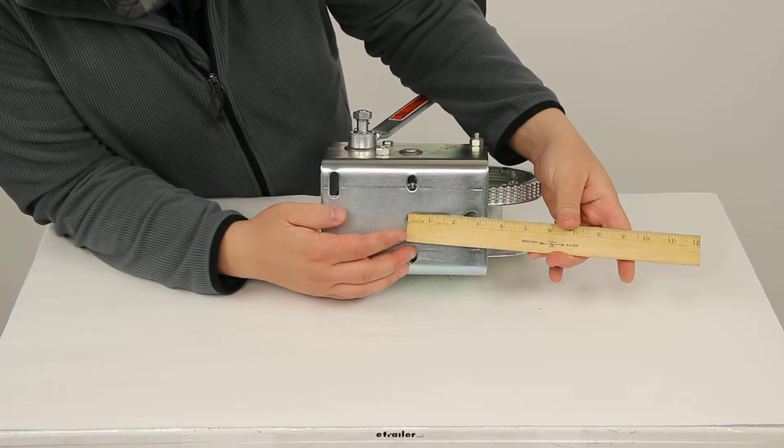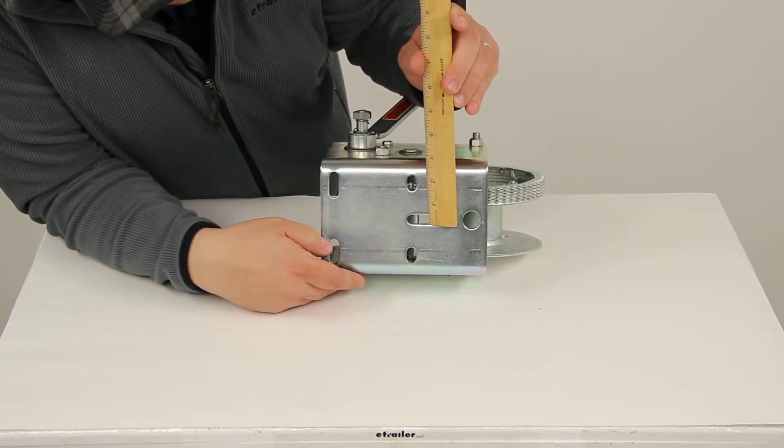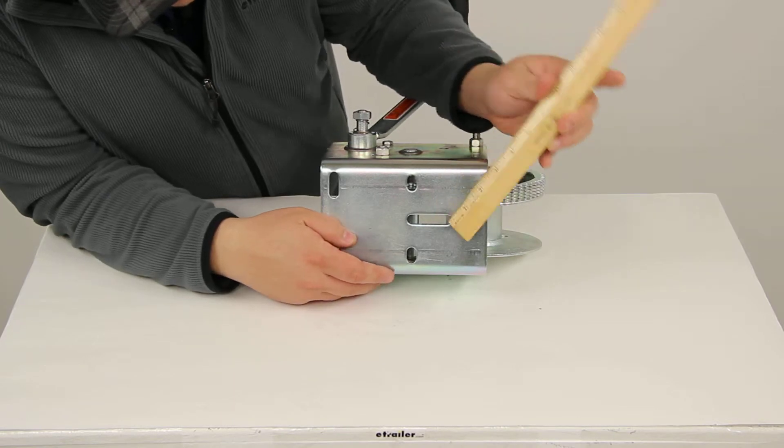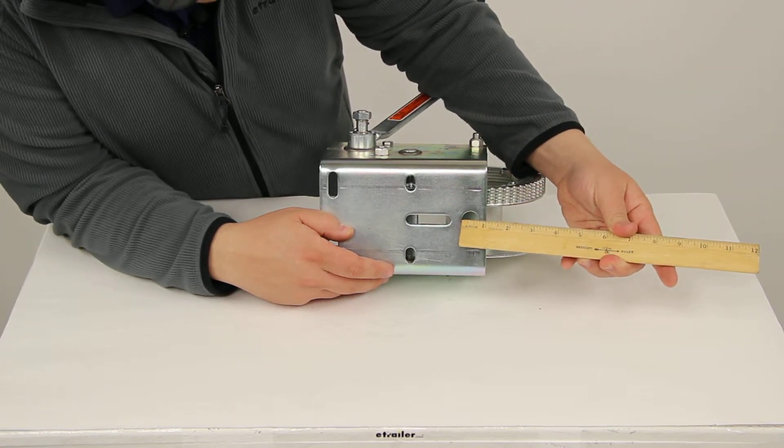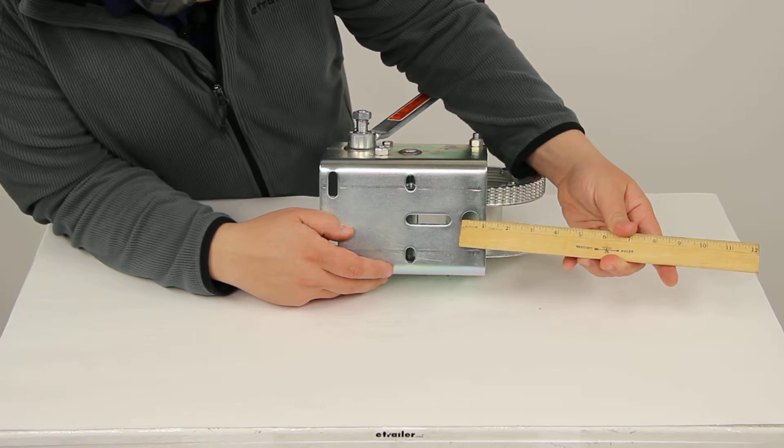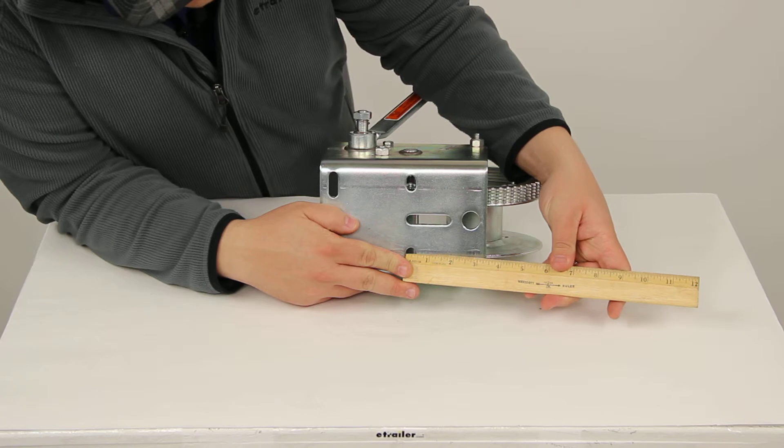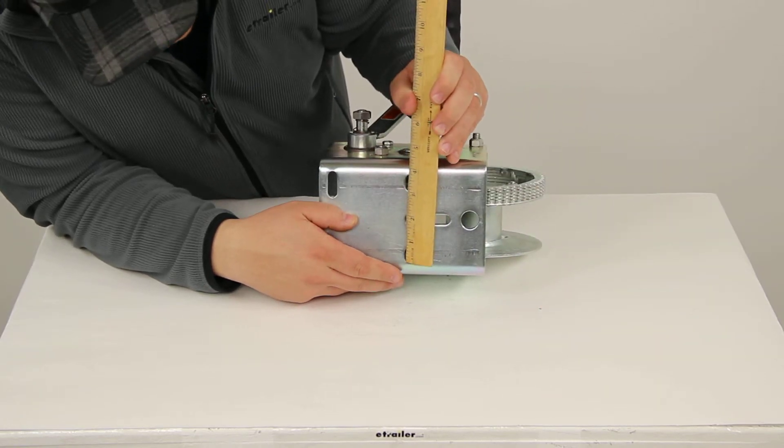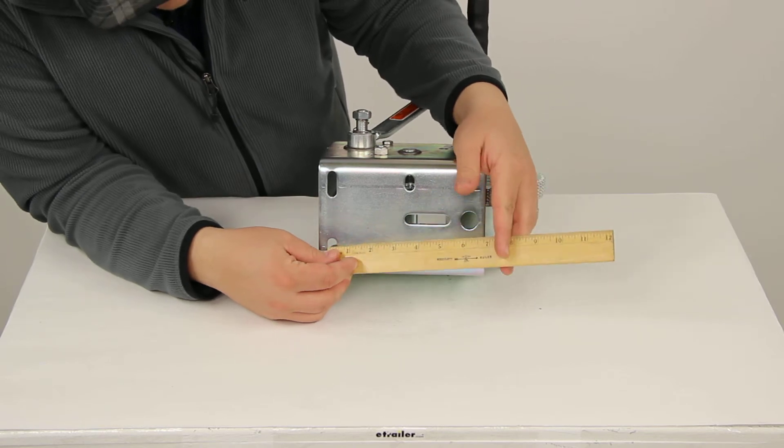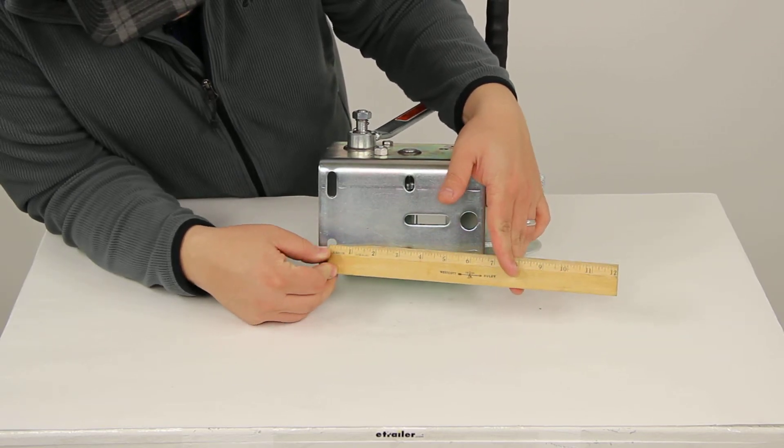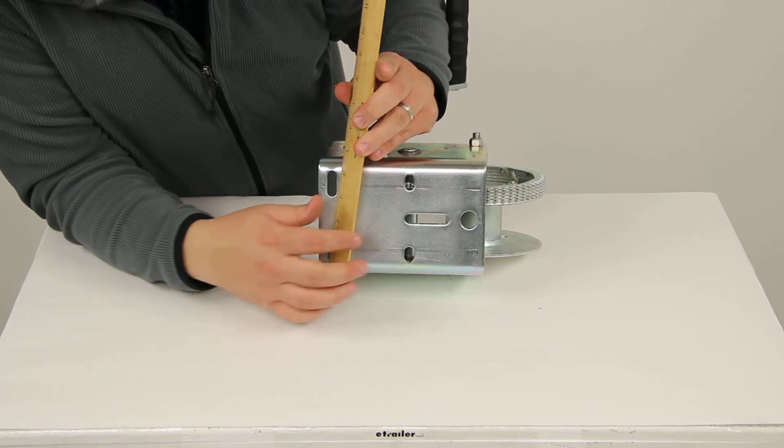The elongated hole is going to measure 1 3/4 of an inch by 3 1/8. This hole over here is going to give us a diameter of about 5 1/8 of an inch. These two holes are identical. They're going to measure 3 1/8 by 5 1/8. And then these two holes are identical. And they're going to measure 3 1/8 by about 1 1/16.